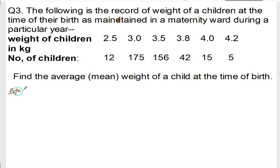Solution. So, first of all, weight of the children. Let me write down as XI. I am just writing down weight of children as XI. Let me write down everything here. 2.5, 3.0, 3.5, 3.8, 4.0 and 4.2.